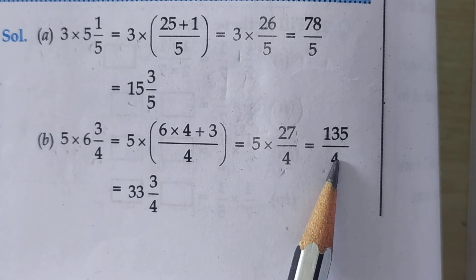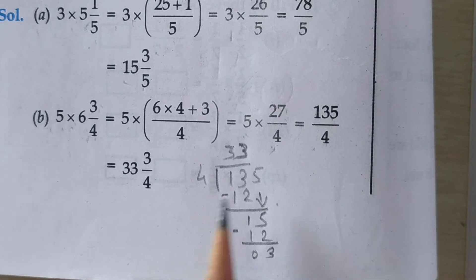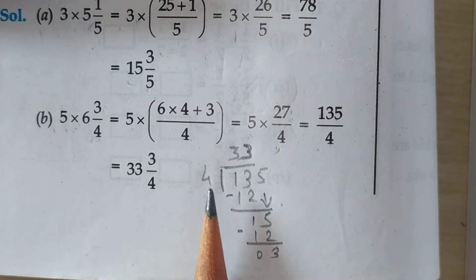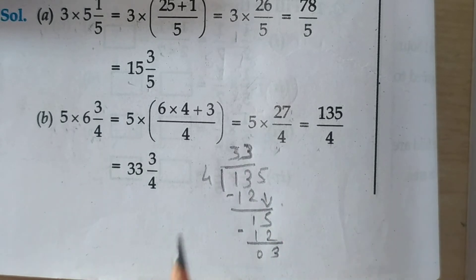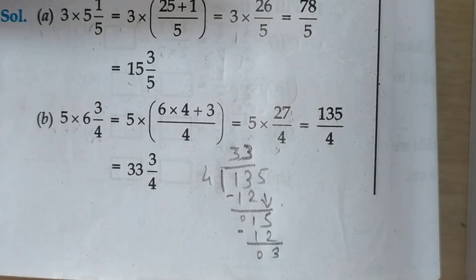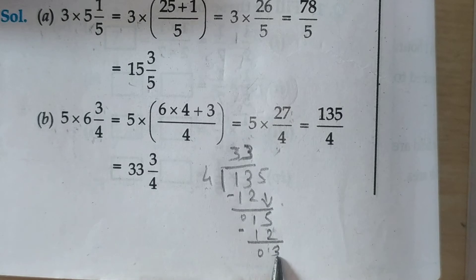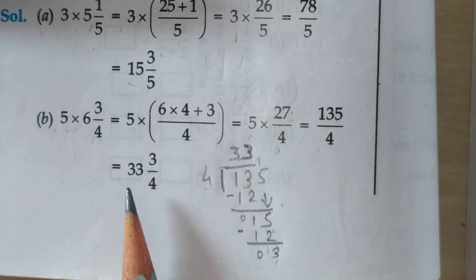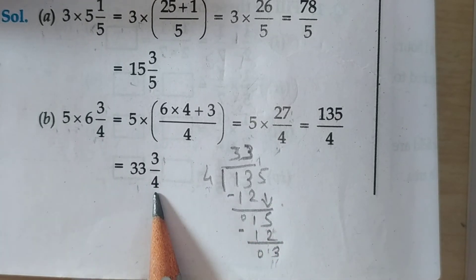5 times 27 are 135 upon 4. Now convert this improper fraction into a mixed fraction. Do division: 135 divided by 4. 4 threes are 12, 13 minus 12 is 1, take 5 down, 15 is there. 4 threes are 12, 15 minus 12 is 3. So quotient is 33 — write down as whole number. Remainder 3 as numerator and 4 as it is.